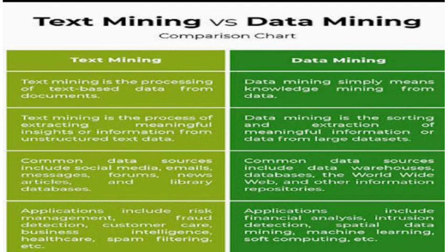A comparison between text mining and data mining: text mining is the process of extracting text-based data from documents, while data mining means knowledge mining from data. Text mining is the process of extracting meaningful insights or information from unstructured text data. Data mining is the sorting and extraction of meaningful information from large data sets. Common data sources for text mining include social media, emails, messages, forums, news articles, and library databases.